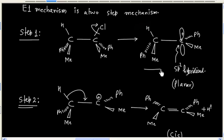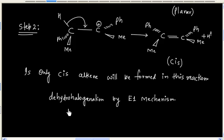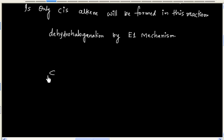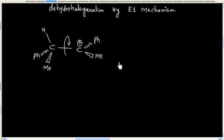We can answer this question by looking at this carbocation. Basically rotation about this single bond is permissible. So we can rotate. Rotation about single bond is permissible.